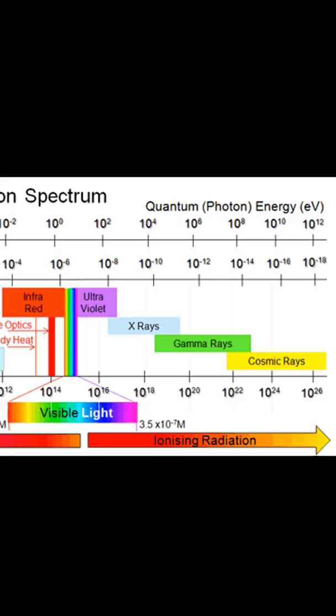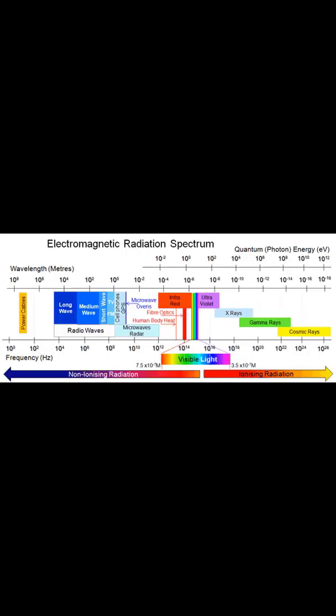The astute observer may have recognized that x-rays and gamma rays overlap in wavelength. And so what gives? If you have a wave of this wavelength, how do you tell if it's an x-ray or a gamma ray? And the difference is in their origin.